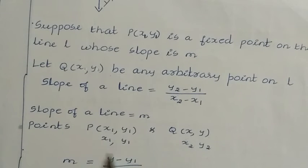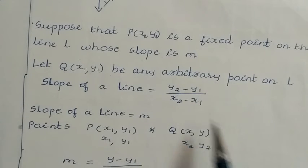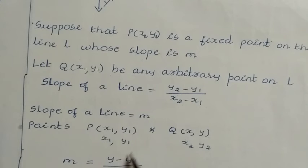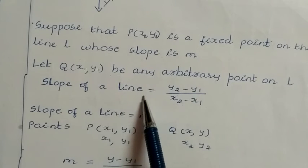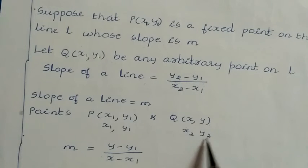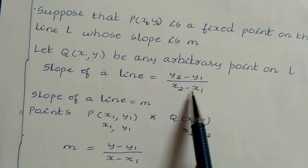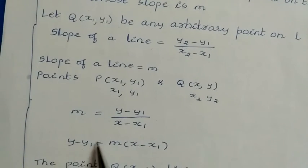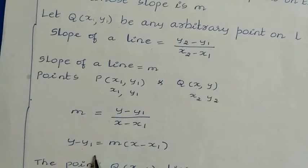Let us take P as (x1, y1) and Q as (x2, y2). Using the slope formula and substituting these values: the slope m is equal to (y2 − y1) over (x2 − x1), which becomes (y − y1) over (x − x1). Cross-multiplying gives us: y − y1 = m(x − x1).